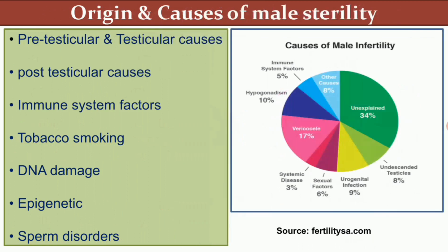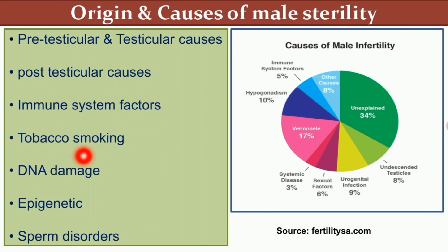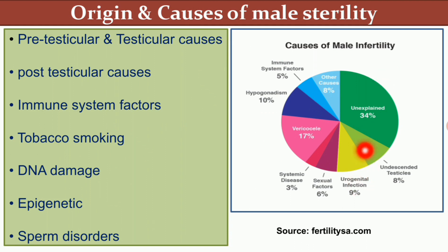There are different causes of male sterility: pre-testicular or testicular causes, post-testicular causes, immune system factors, tobacco smoking, DNA damage, epigenetic factors, and sperm disorders. This diagram clearly shows different causes of male sterility — for example, 9% of male infertility is caused by urogenital infection, 6% by sexual factors, 3% by systemic disease, among other percentages.